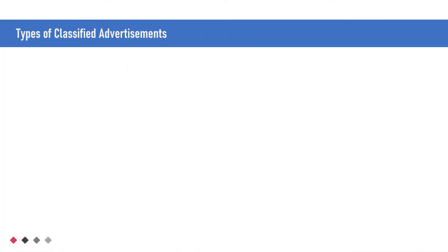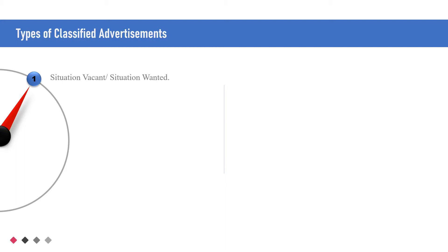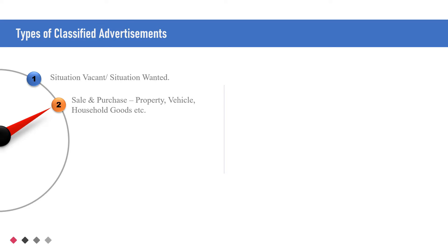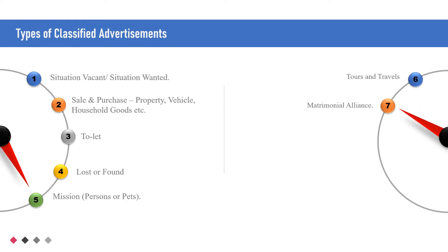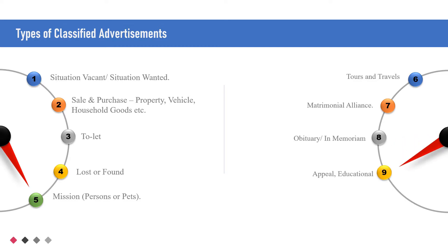Types of classified advertisements include: To let, Lost or found, Who is to let, Missing person or pets, Tours and travels, Matrimonial alliance, Obituary or in memoriam, Appeal or educational, and Change of name or address or any other information.